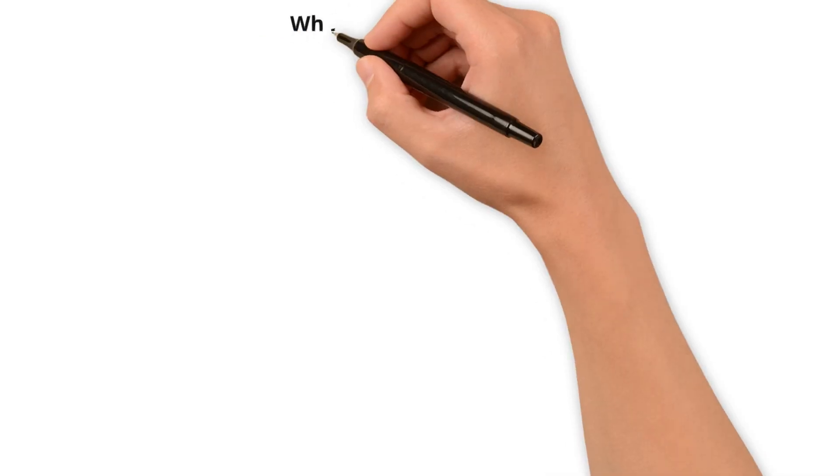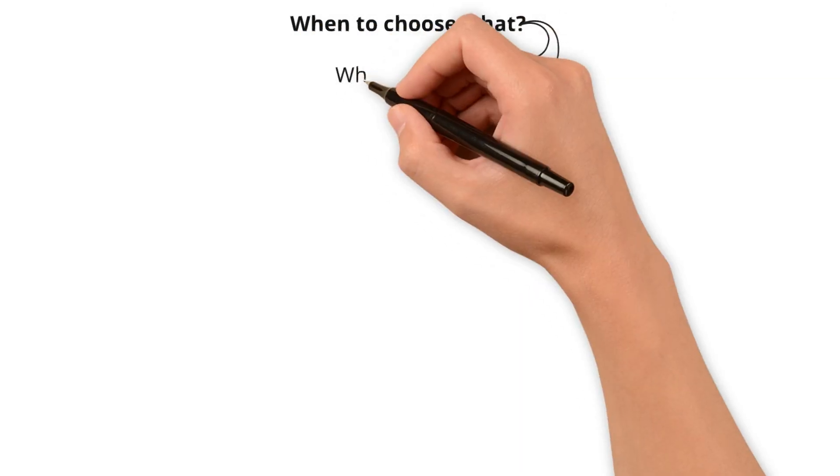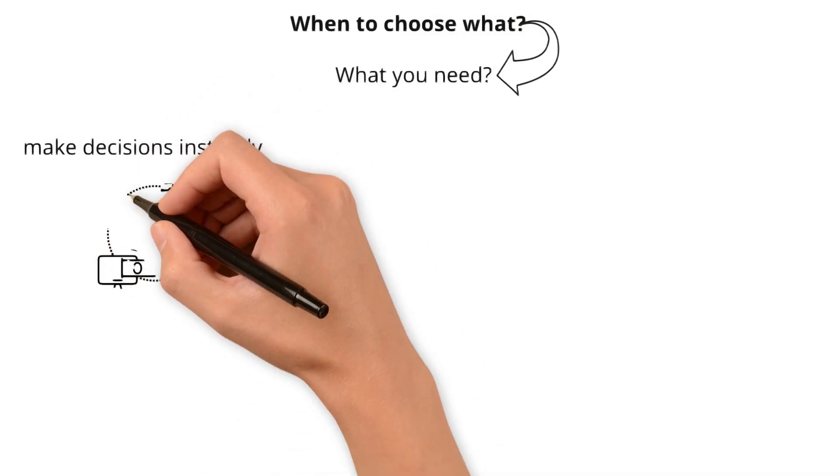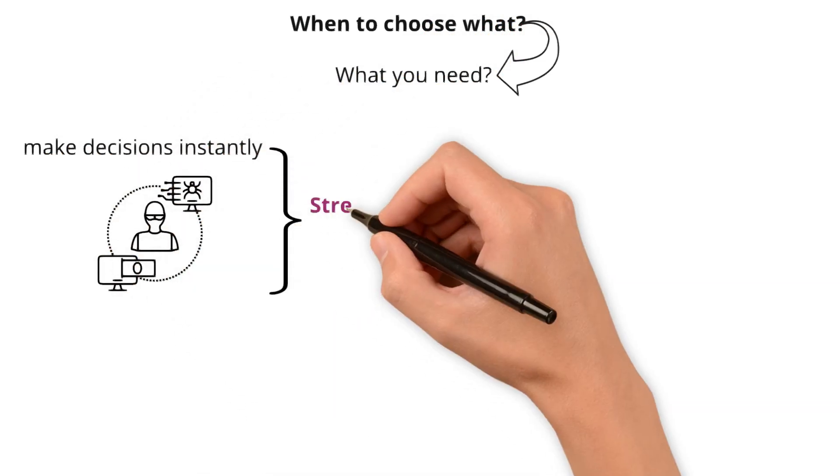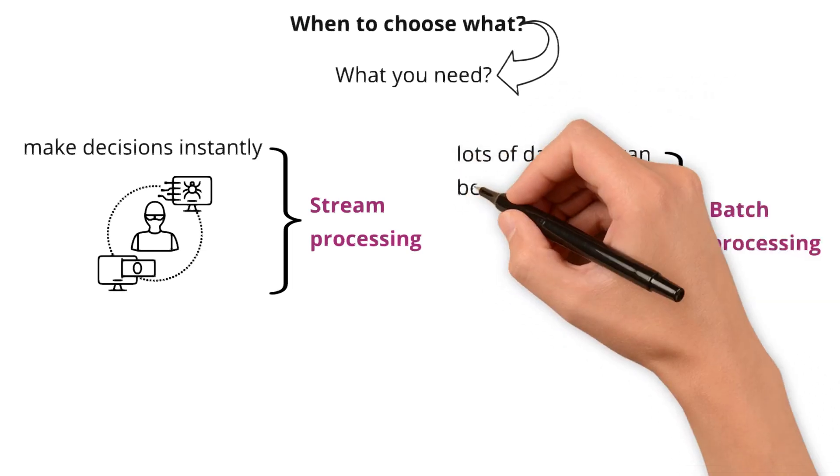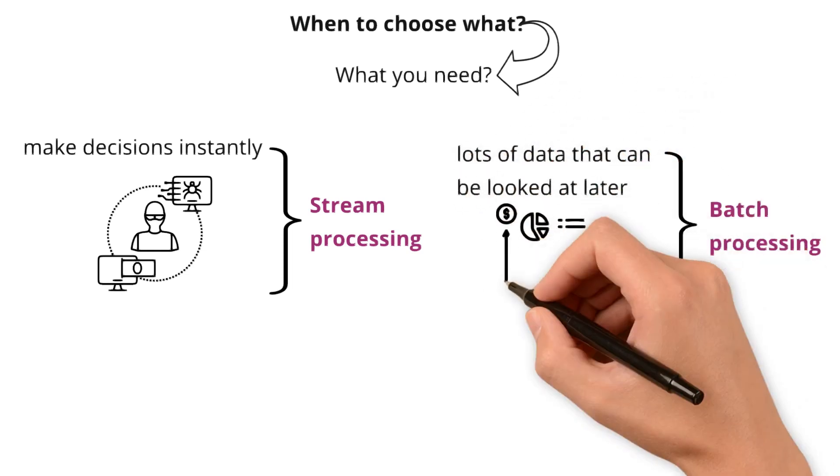So when to choose what? Choosing between batch and stream processing boils down to what you need. If you have to make decisions instantly, like catching fraud as it happens, stream processing is your go-to. But batch processing is the way to go if you are dealing with lots of data that can be looked at later, like a daily sales report.